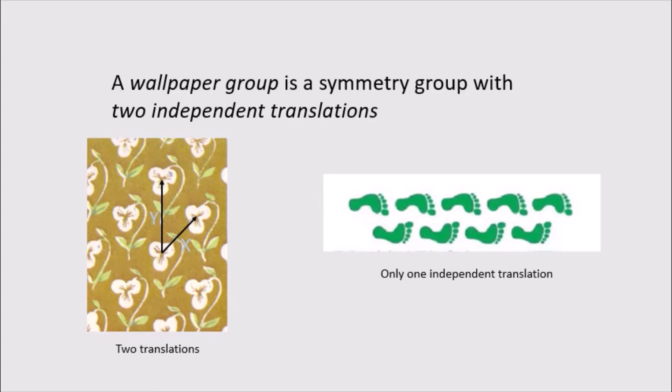So it turns out that wallpaper group is actually a mathematical term, and it means any symmetry group containing two independent translations. So for example, in our medieval wallpaper, our arrows x and y aren't pointing in the same direction, so they're independent. In the case of the footprints, you can only translate it horizontally, so it's not a wallpaper group. We can think of wallpaper groups as being two-dimensional in a sense.